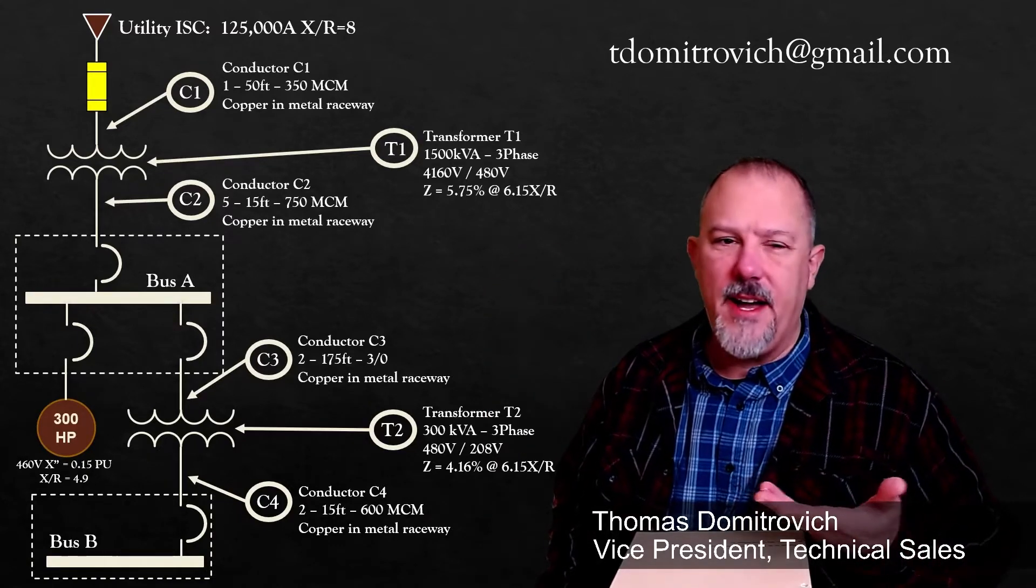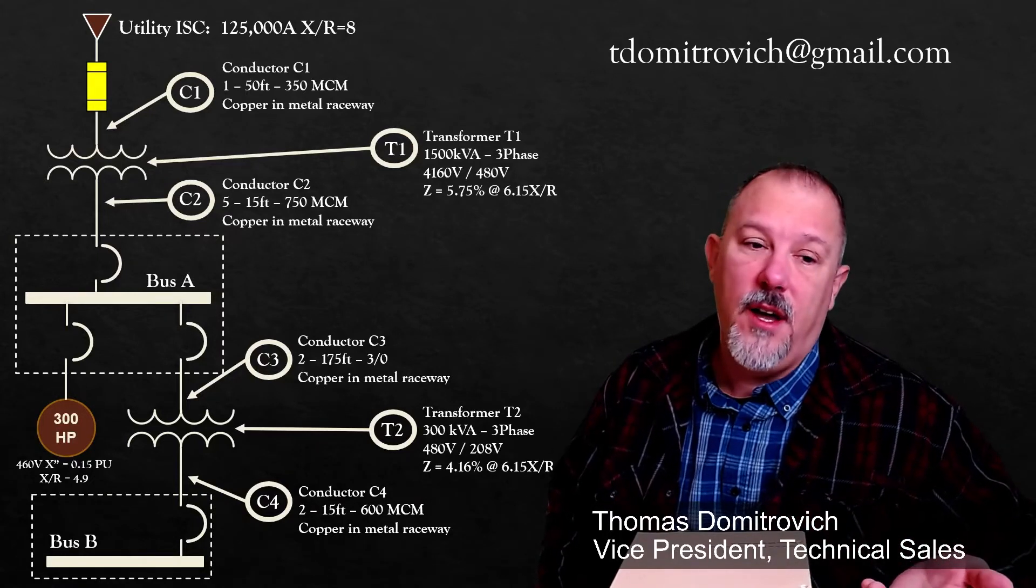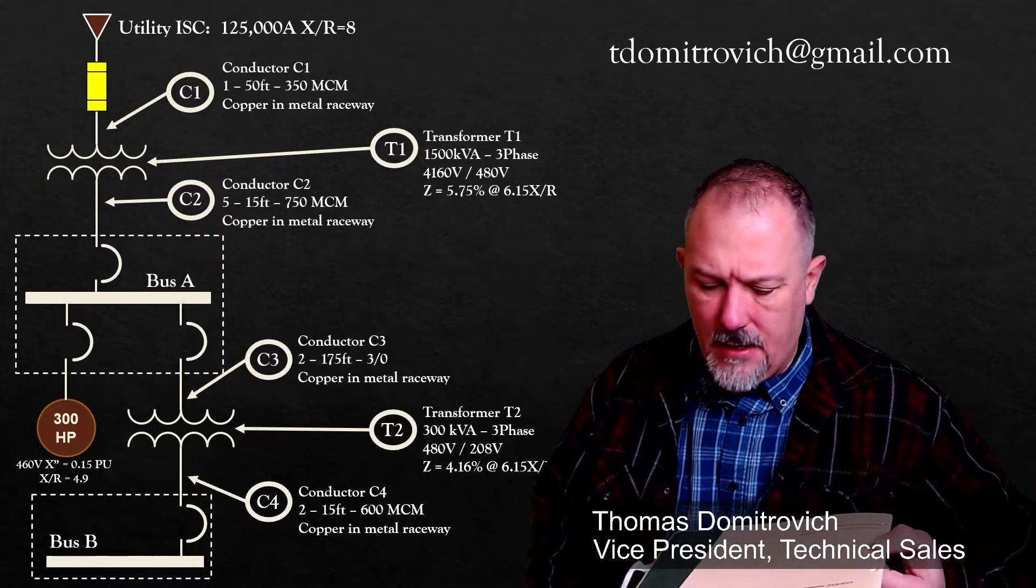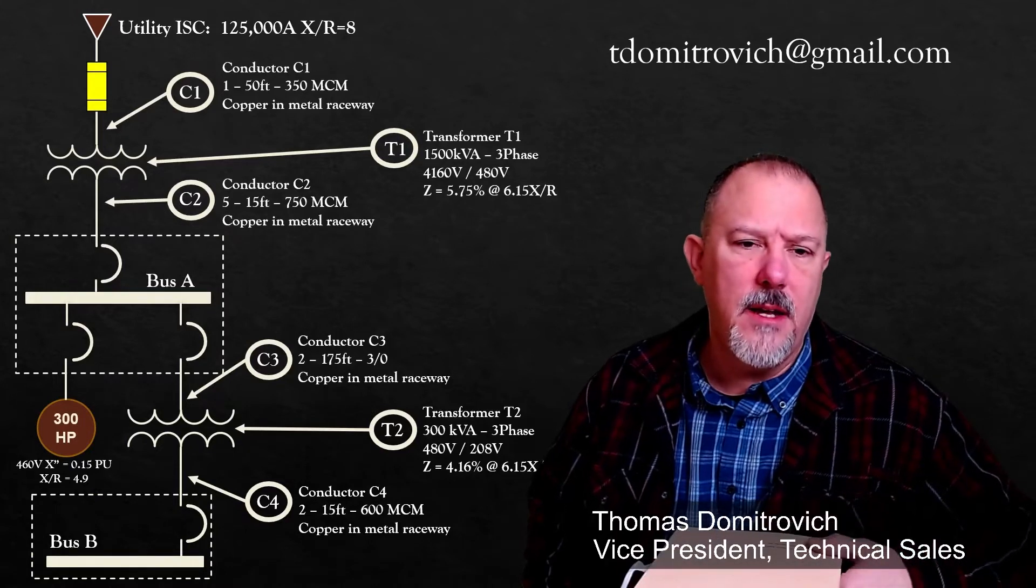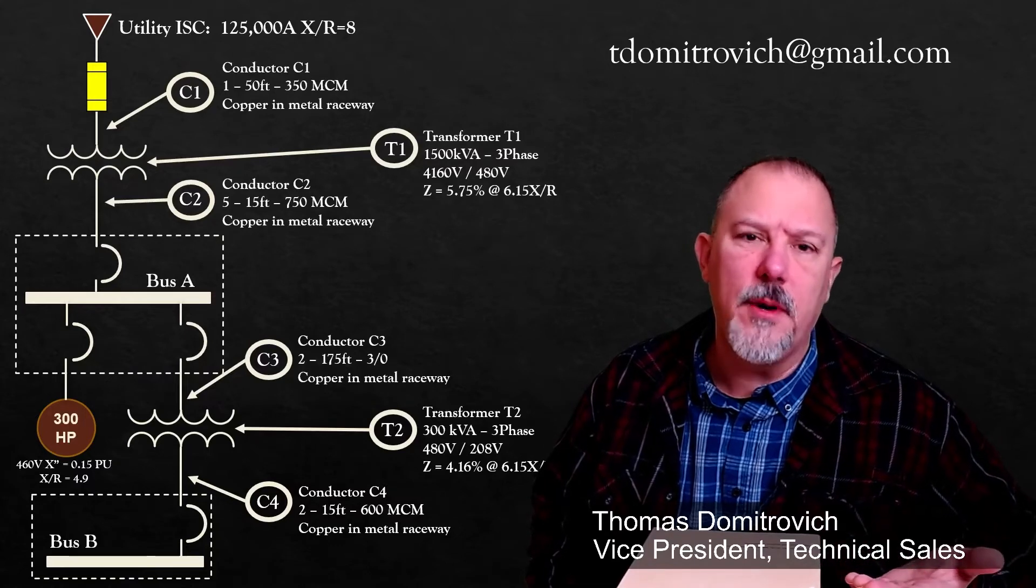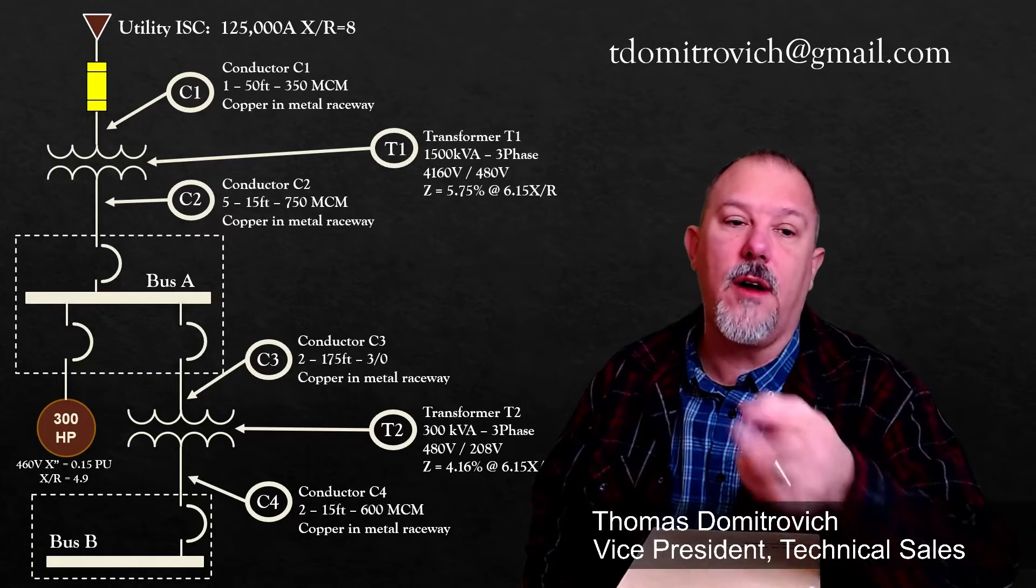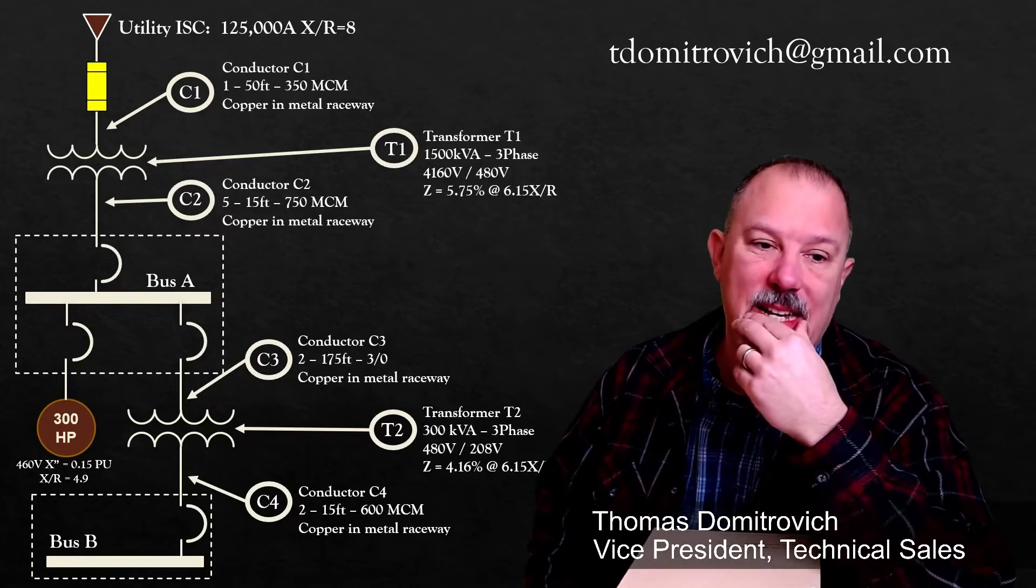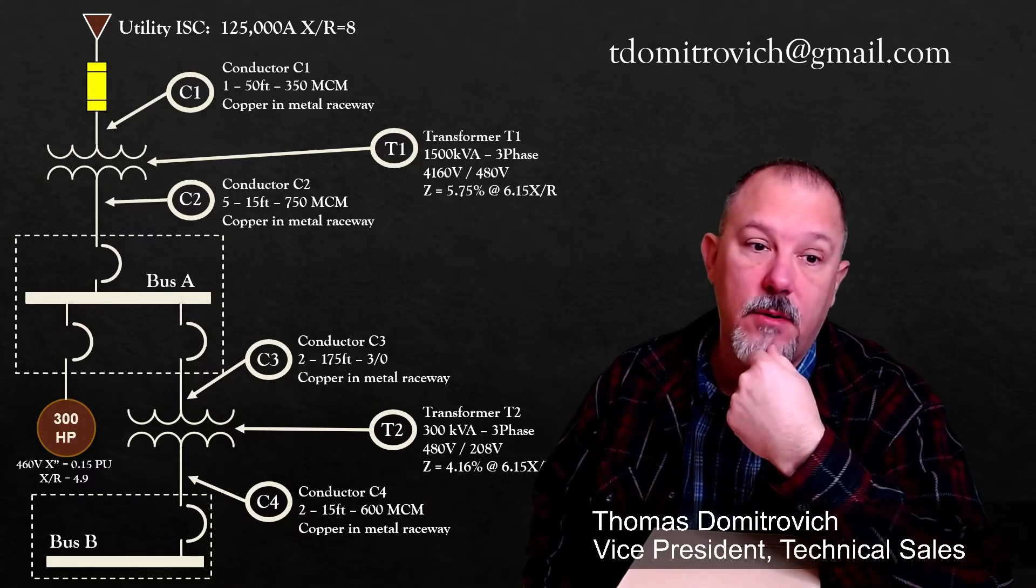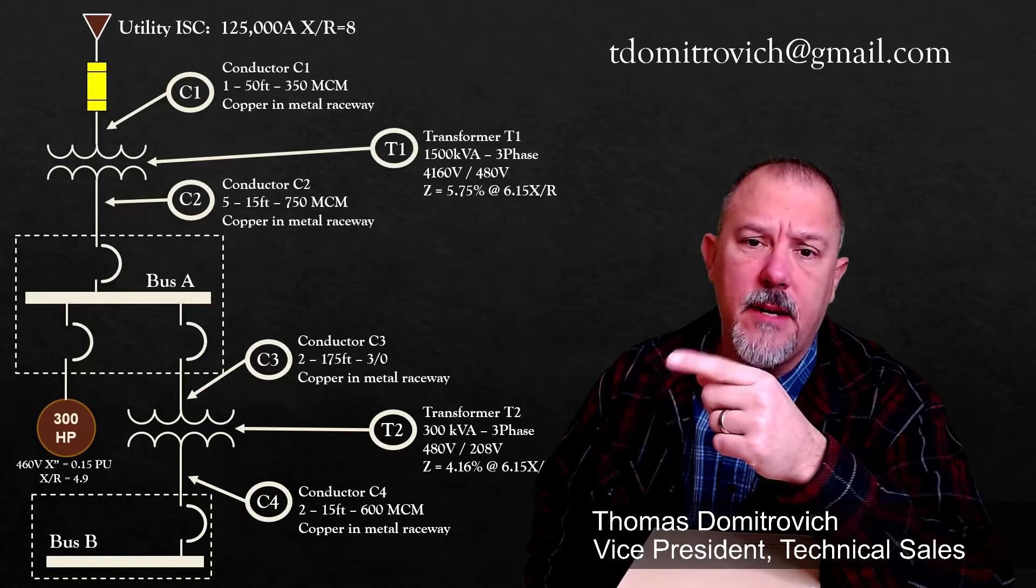Like on that motor, the 0.15, typically I've used 0.2 for a per unit. I can't remember why I set it on 0.15. I'll have to take a look. I think I found something in an IEEE book. I don't know if it was the red book or the buff book that basically tells you to use 0.15 for certain size motors. So that's why I used 0.15 and the X to R I also got out of an IEEE reference, 4.9. I threw in the 460 volts because I've never seen a 480 volt rated motor. They're all 460 volts. So that's where I got that number. The red book, the buff book are two other great resources for you.